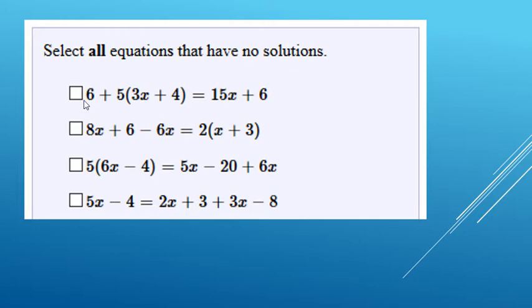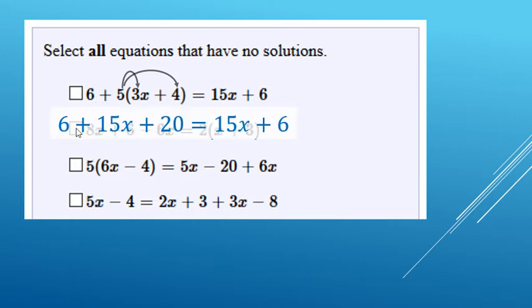So starting from the top, we do need to clean up this equation. In other words, we're going to simplify. We're going to do distributive property first. So we still have the 6 plus there, 5 times 3x, 15x. 5 times 4, plus 20. And then the right hand side already cleaned up, 15x plus 6.